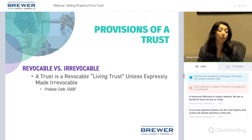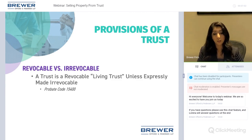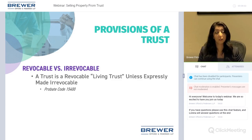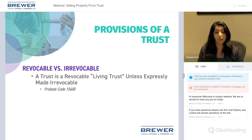All trusts are revocable living trusts unless made irrevocable. When you create a trust it's automatically revocable unless you specify otherwise. The vast majority of trusts created are revocable — I have not personally prepared a trust that was irrevocable upon execution.